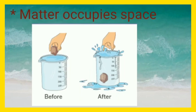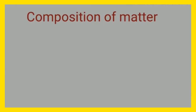After that, we will observe that the water occupies the space in the beaker. When the stone is dropped, the water spills over the beaker to make room for the stone. This concludes that matter occupies space.